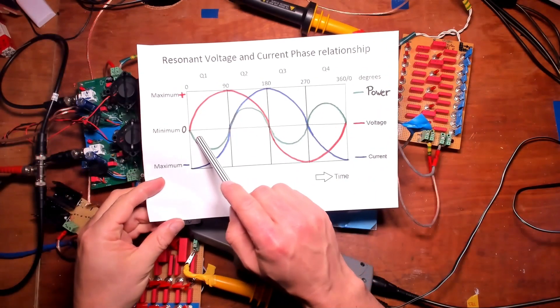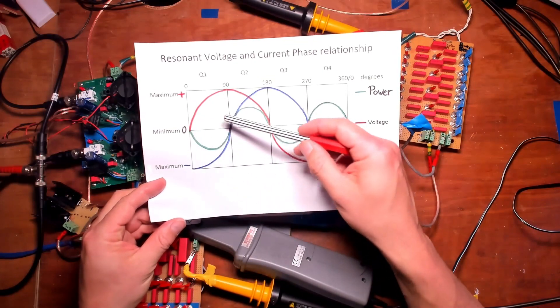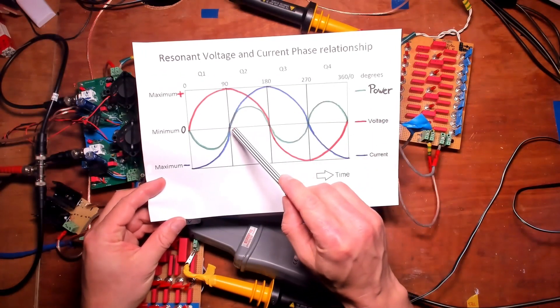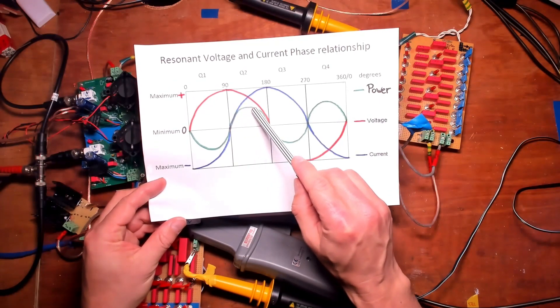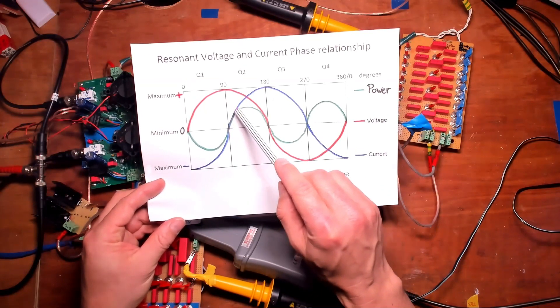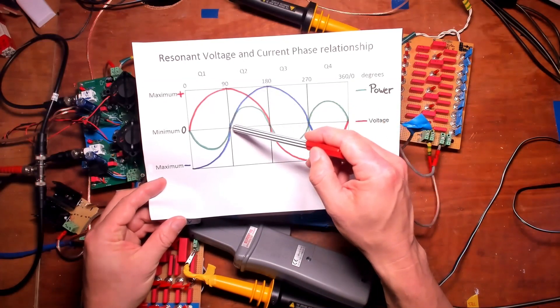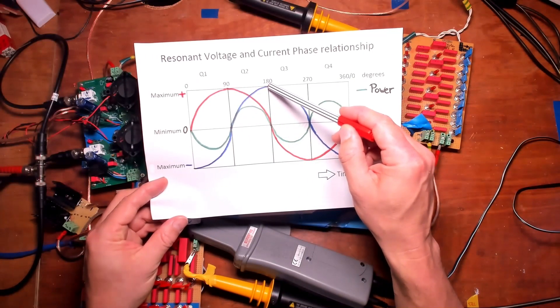So here the capacitor is charged up and we can see that as the voltage is being increased. And here in the positive power cycle the power is consumed and the coil is being charged up, as we can see that the current is increasing.